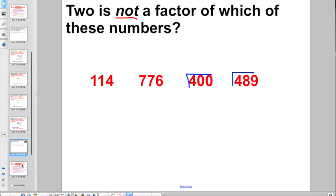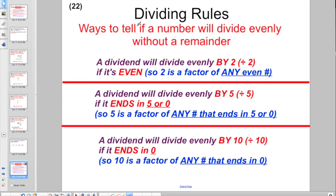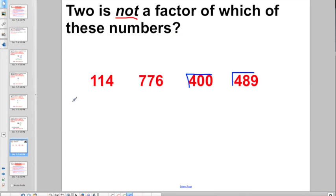Well, let's go back and think about the divisibility rules. Hey, a dividend will divide evenly by 2 if it's even. That's something good to think about. So 2 is not a factor of which one of these numbers. Well, that guy's even because he ends in 4. This guy's even because he ends in 6. This guy's even because he ends in 0.